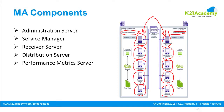Linking to the previous version — the administration server is used for configuring the GoldenGate processes. Whatever processes we configure, that configuration is handled by the administration server. You create Extract processes, you create parameter files — all of this is done in the administration server.